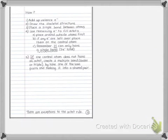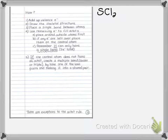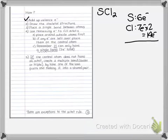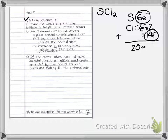Let's try another example: SCl2. Step one — add up valence electrons. Sulfur is in group 6A and has six valence electrons. Chlorine is a halogen in group 7A with seven electrons, and there are two chlorines, so that's 14. Adding six plus 14 gives a total of 20 electrons.